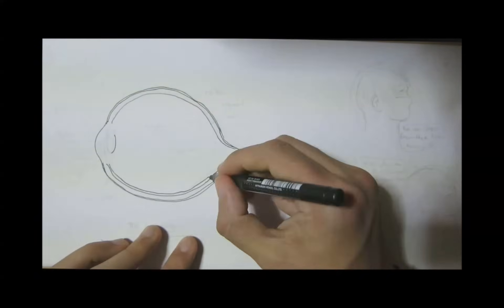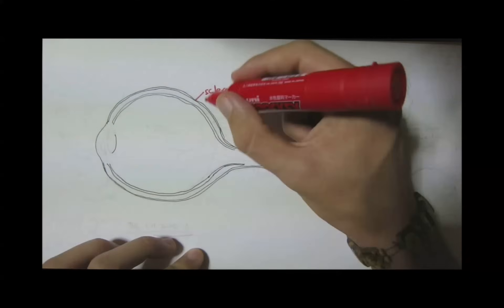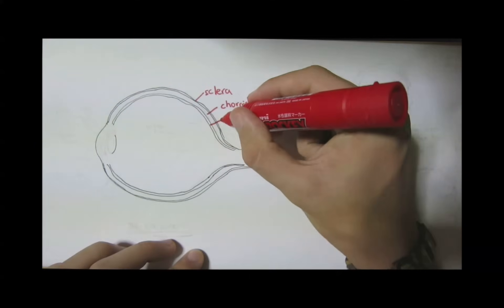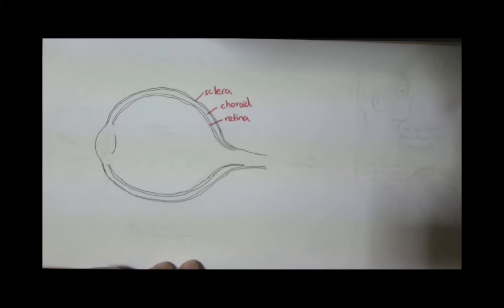The sclera, the outermost layer of the eye containing collagen and elastic fiber. The choroid is a vascular layer of the eye. Retina, which contains the photoreceptors for us to see.